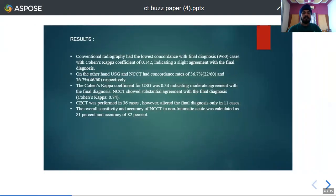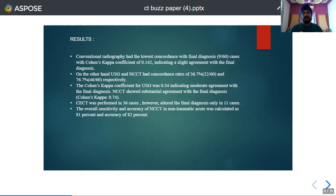The results showed that conventional radiography had the least concordance with the final diagnosis, providing the final diagnosis in only 9 out of 60 cases. NCCT had the maximum substantial agreement with the final diagnosis, providing the final diagnosis in 46 out of 60 cases with a correlation coefficient of 0.74. Ultrasound showed an intermediate concordance with moderate agreement, with a correlation coefficient of 0.34. Contrast CT was performed in 36 out of 60 cases but altered the final diagnosis in only 11 cases. The overall sensitivity and accuracy of NCCT in non-traumatic acute abdomen were 81% and 82% respectively.